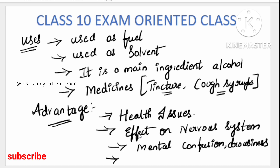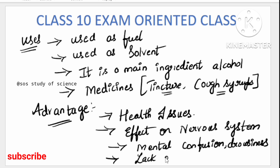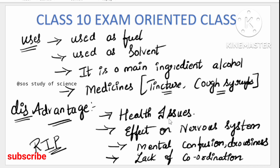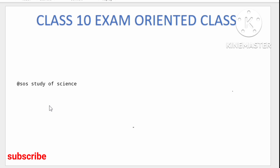So these are the disadvantages: health issues, effect on the nervous system, mental confusion, drowsiness, lack of coordination, and in extreme cases people may also die. All of these are disadvantages of ethanol — meaning it has serious effects on your health.